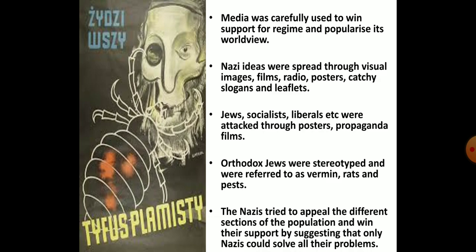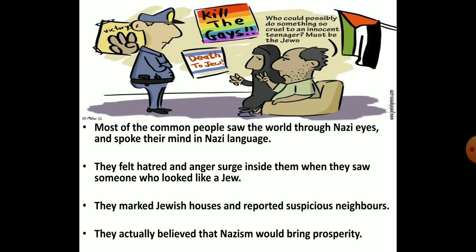Socialists and liberals were shown as weak, degraded and as foreign agents in posters. Propaganda films were created to develop hatred for Jews. The Eternal Jew was the most disgraceful film among these propaganda films. Orthodox Jews were stereotyped and shown with flowing beards, wearing kaftans, though in reality they were a highly assimilated community. They were labelled as women, rats and pests. Nazis worked on the minds of people, trapped their emotions and developed hatred and anger for those they considered undesirable. At the same time, they made efforts to attract different sections of the population, suggesting that Nazis alone could solve their problems. Most common men believed that Nazism would bring prosperity.